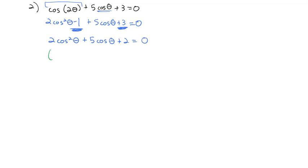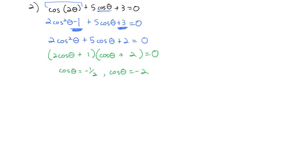Now that everything is just cosines, I can try to factor. 2cos²θ factors as cosθ times 2cosθ, and 1 × 2 gives the 2 at the end with everything positive. So: (cosθ + 2)(2cosθ + 1) = 0, which gives cosθ = −1/2 or cosθ = −2. But cosine can never be more than −1 or 1, so cosθ = −2 is impossible.